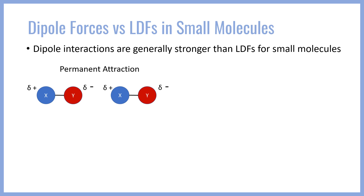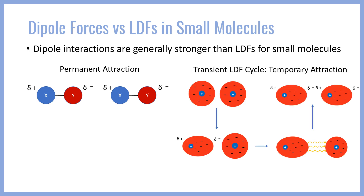On the other hand, LDFs are a fleeting interaction — they are temporary. LDFs occur when the probabilistic skewing of one electron cloud leads to a transient dipole, which induces a dipole on another molecule. However, when and if this occurs in the first place is a game of chance, quite literally. There is no permanent attraction between these molecules. The symmetric electron clouds on the top left of the diagram have no attraction for one another, while those on the top right with partial charges do. However, as soon as those partially charged molecules move apart, they return to their symmetric orientation and there is no longer any attraction between one molecule and another.